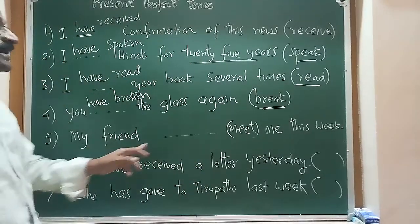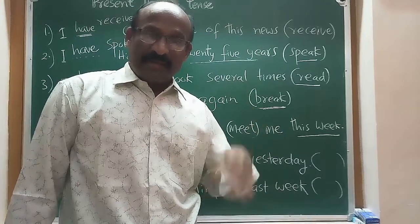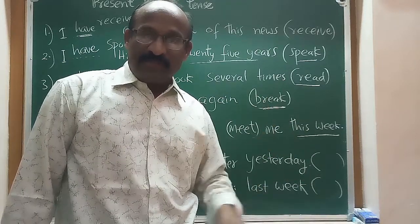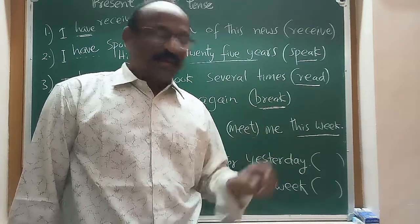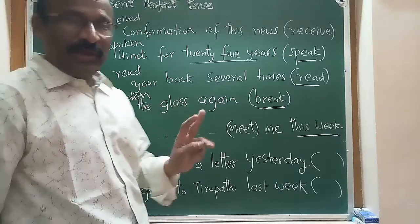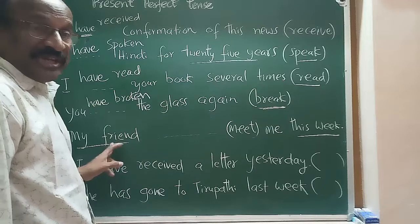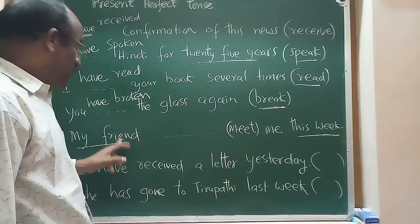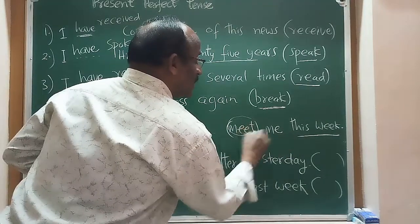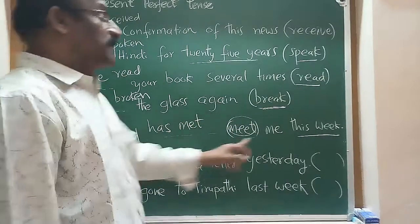Next exercise: 'My friend has met me this week.' Keywords like this week, this month, this year, recently, just now, never, ever, yet, often signal present perfect. 'My friend' is a third person singular, so we use 'has.' The past participle of meet is met — meet, met, met. So: 'My friend has met me this week.'